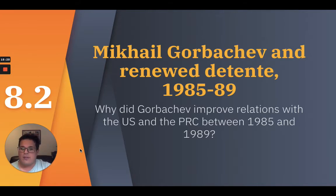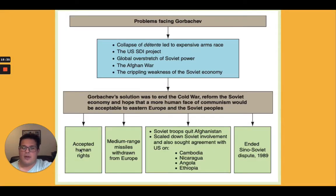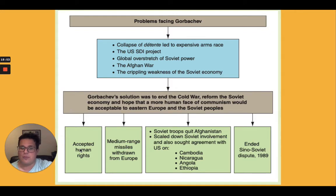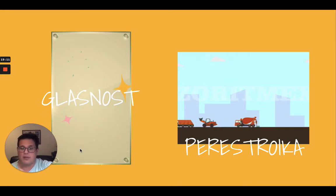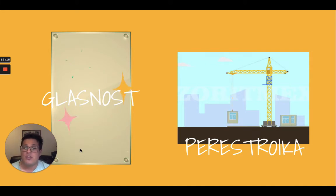The second section covers Mikhail Gorbachev and the renewed détente from 1985 to 1989. The guiding question is: why did Gorbachev improve relations between the U.S. and the PRC? When Gorbachev became General Secretary of the Communist Party, he appeared a youthful and dynamic leader in contrast to his elderly, ill predecessors. His great aim was to modernize the USSR, and two key terms — glasnost and perestroika — set the tone for his reforms. Glasnost refers to openness regarding the USSR's economic and political systems, including public discussion and debate. Perestroika means transformation or restructuring of the Communist Party to make it more responsive to the needs of the people.